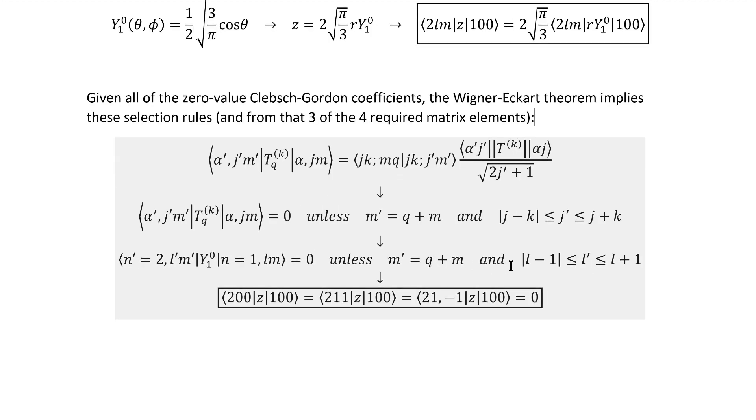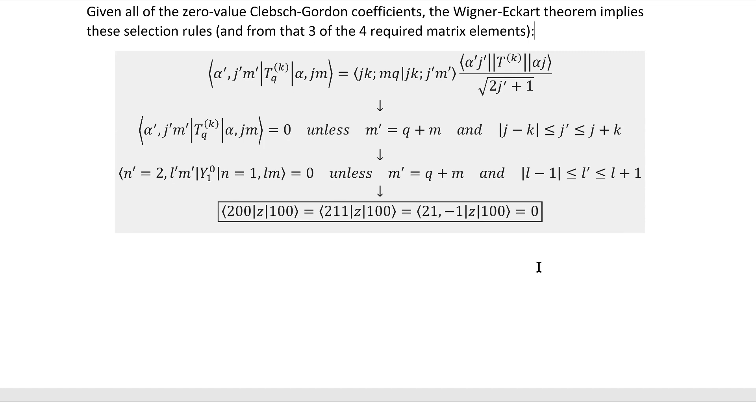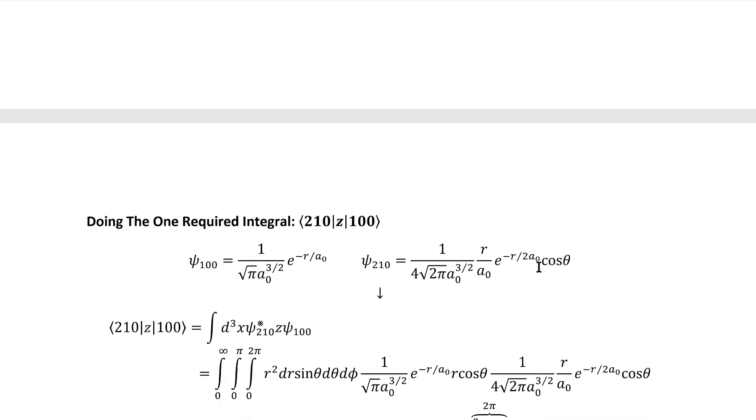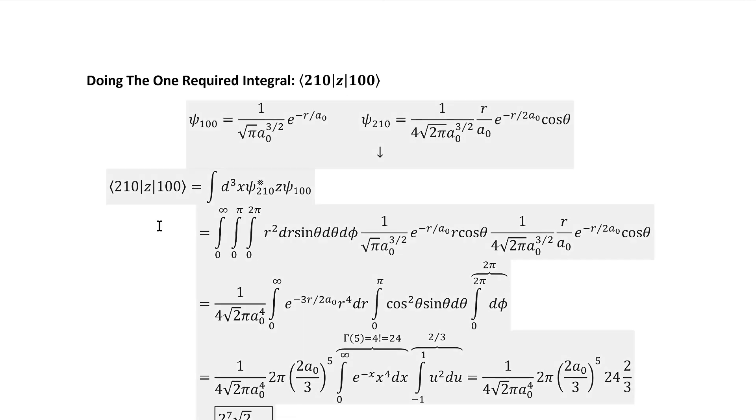We can see from considering these specific selection rules that these three of the four matrix elements that we're interested in are immediately zero. So that's how the Wigner-Eckart theorem saves us a whole bunch of time here. But, of course, we still do have one matrix element that isn't zero, and we are going to have to do an integral to evaluate that one.